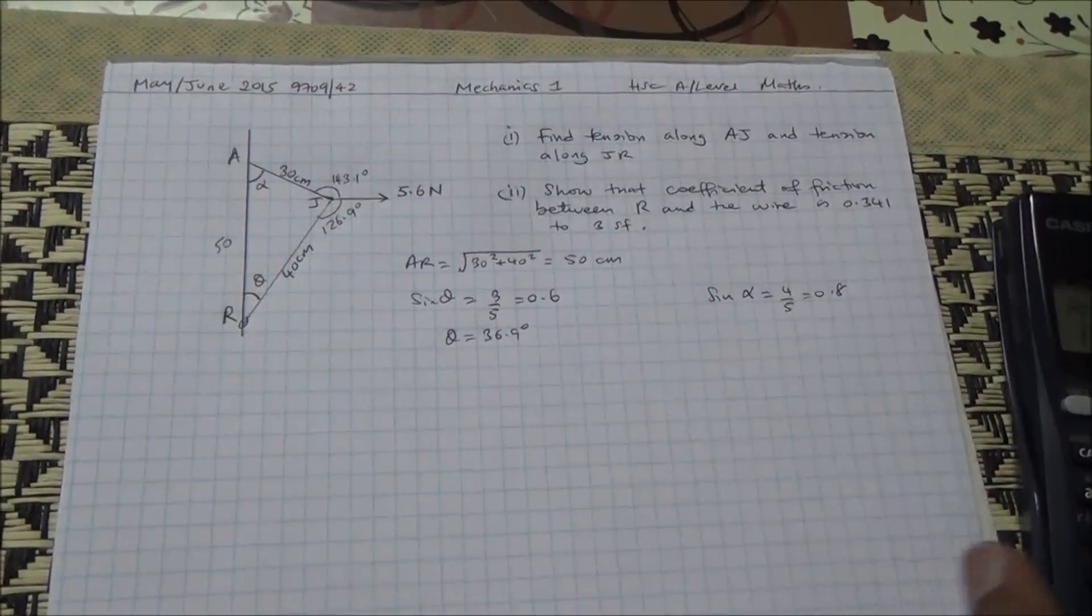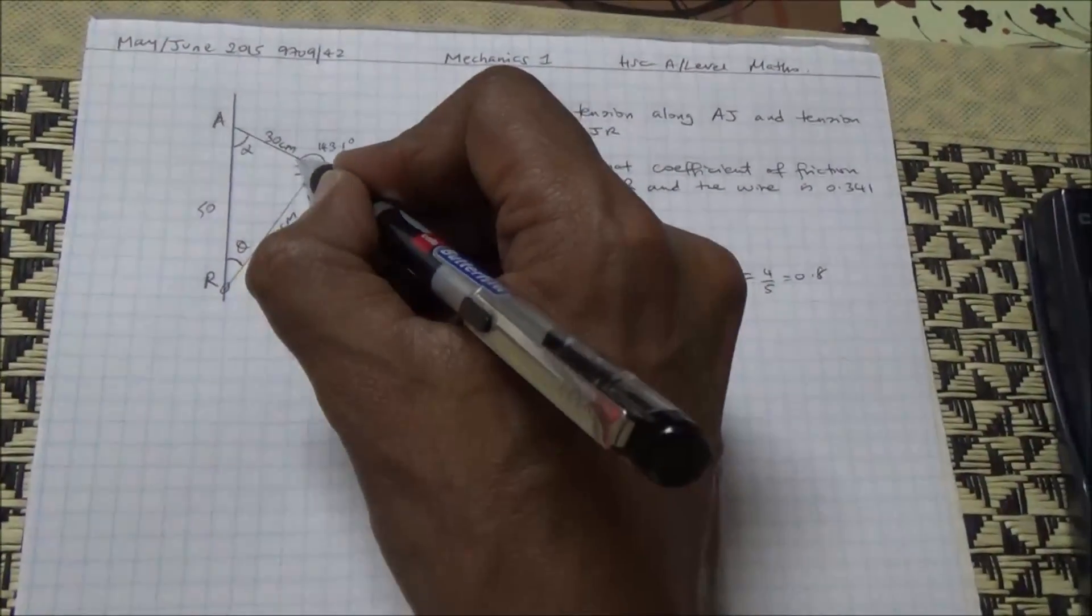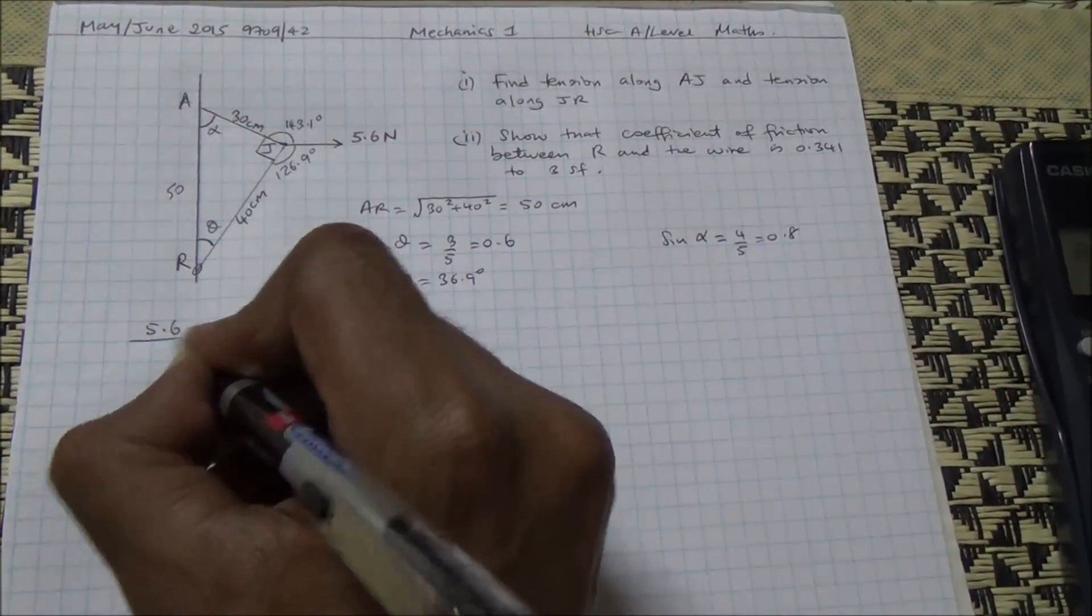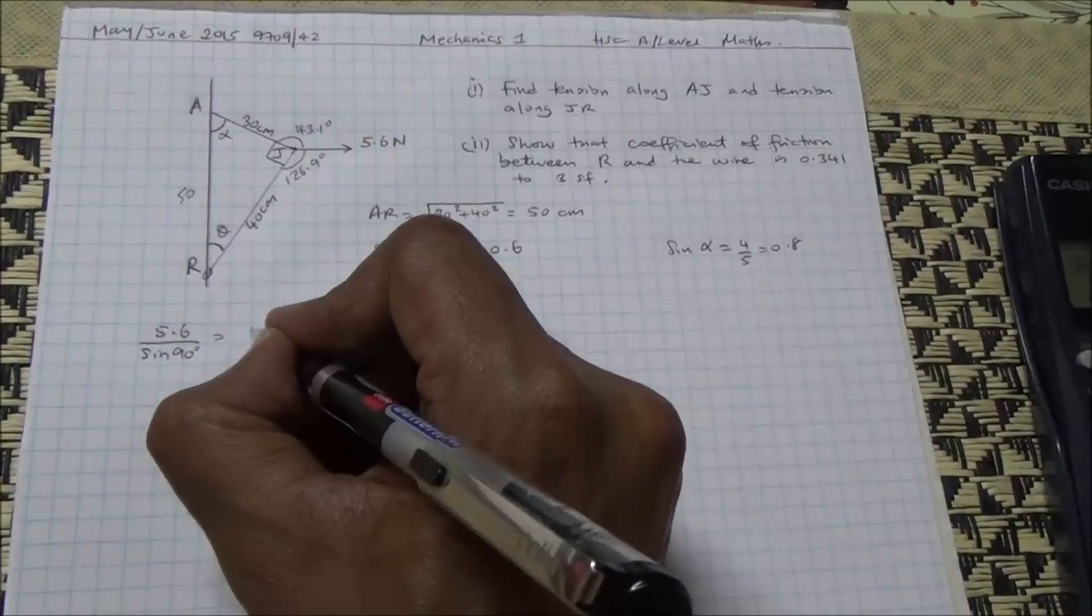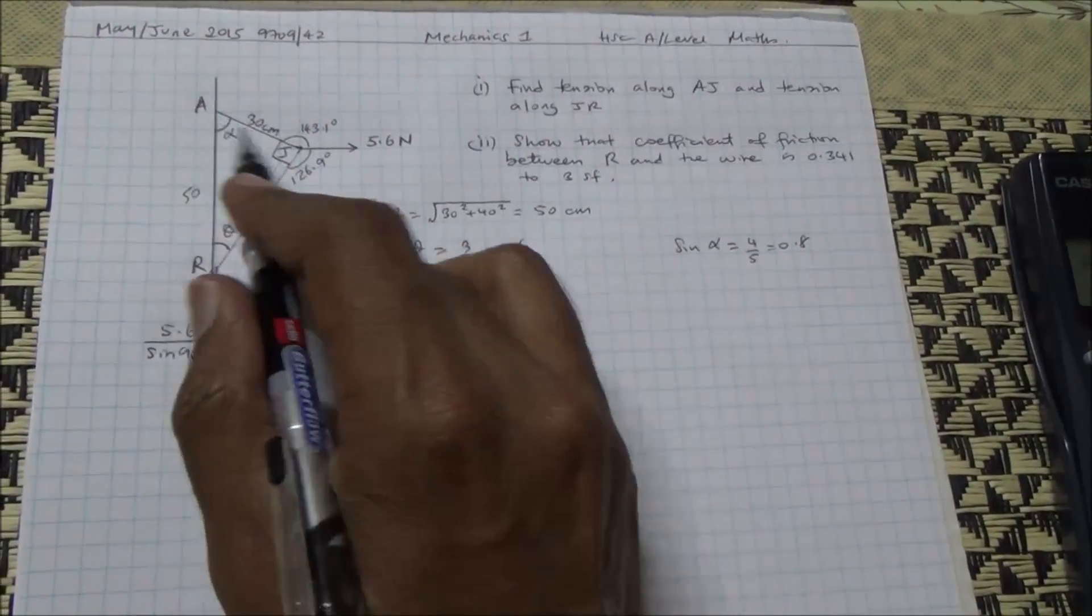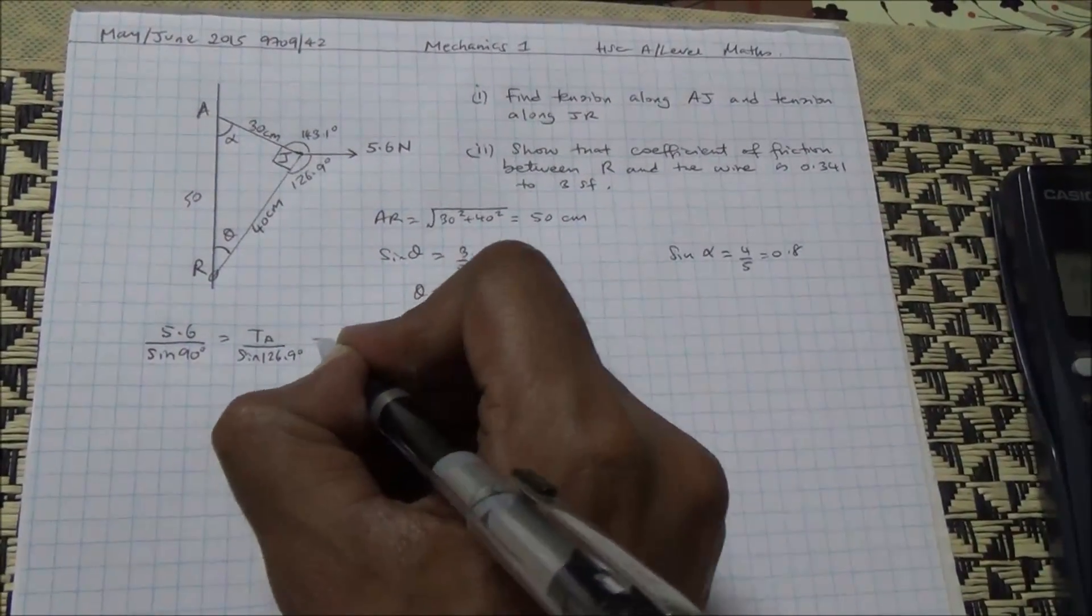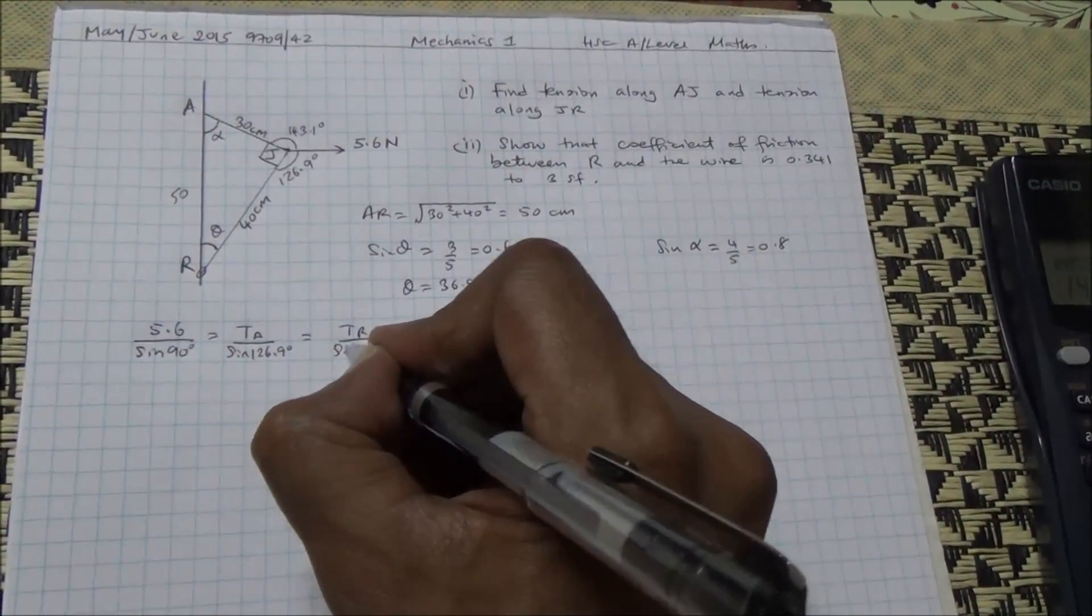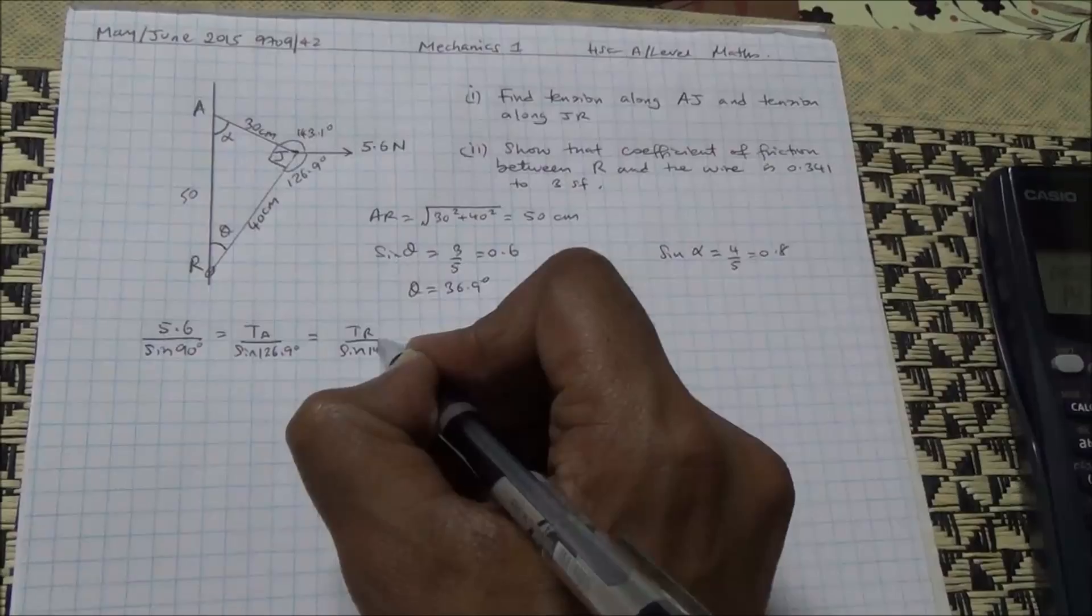Now, where do we go from here? We can use Lamy's theorem. By Lamy's theorem, we're going to say 5.6 over the sine of 90 degrees is equal to the tension along AJ over the sine of 126.9, which is equal to JR, the tension along JR, divided by the sine of 143.1.